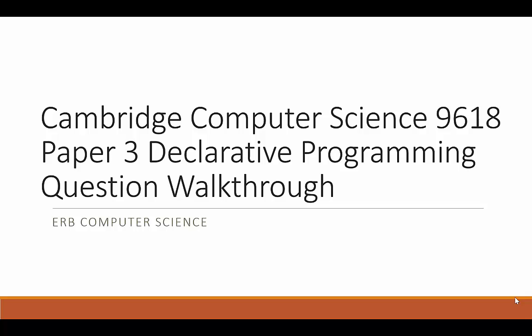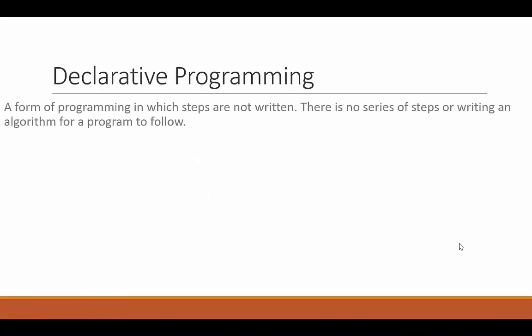In this video, we're going to take a look at a Cambridge Computer Science 9618 question that's pretty popular on the Paper 3 exam, and that's about declarative programming. So let's learn a little bit about it and walk through a question together.